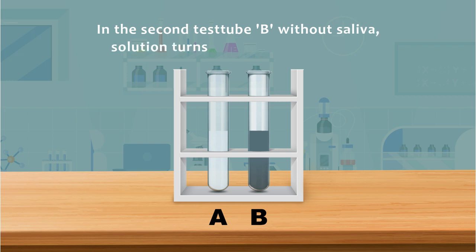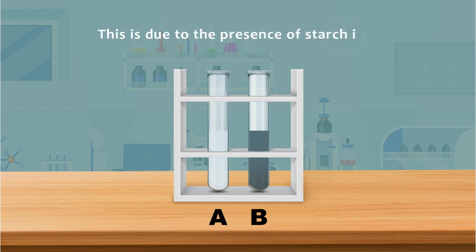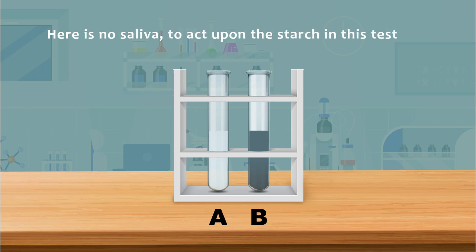In the second test tube B without saliva, solution turns to bluish black color. This is due to the presence of starch in it. There is no saliva to act upon the starch in this test tube.